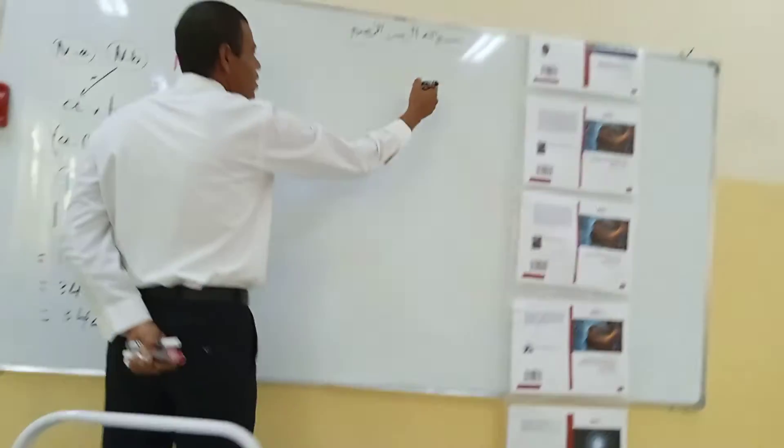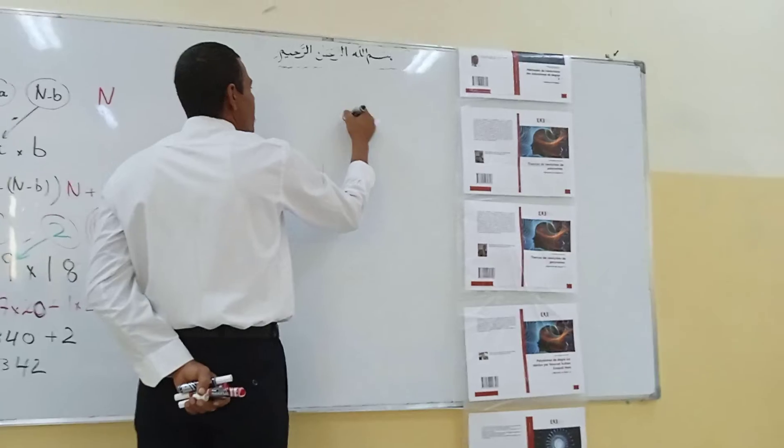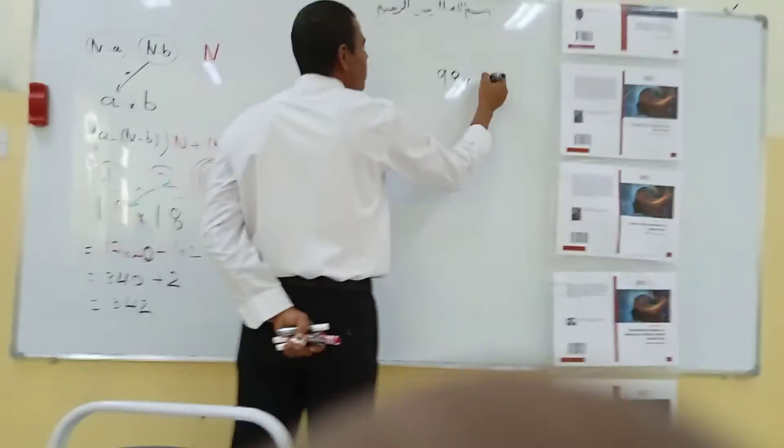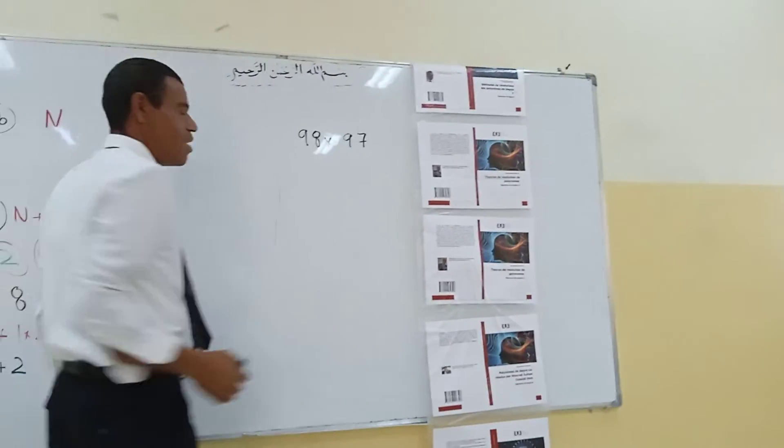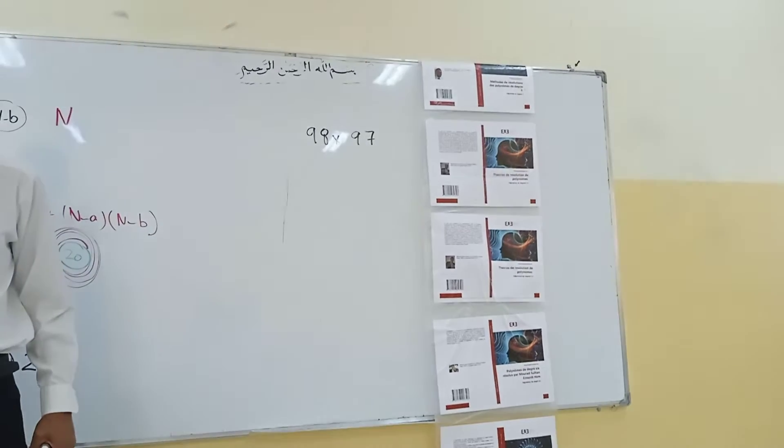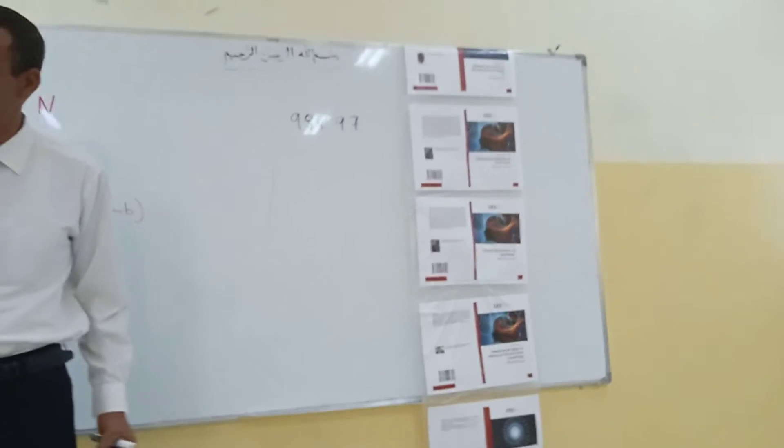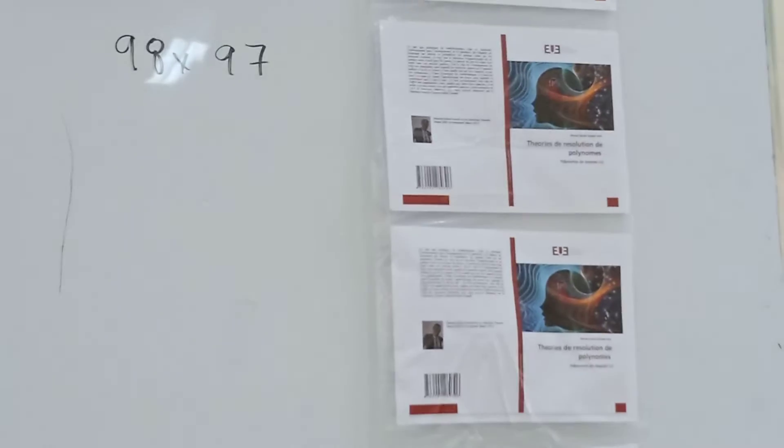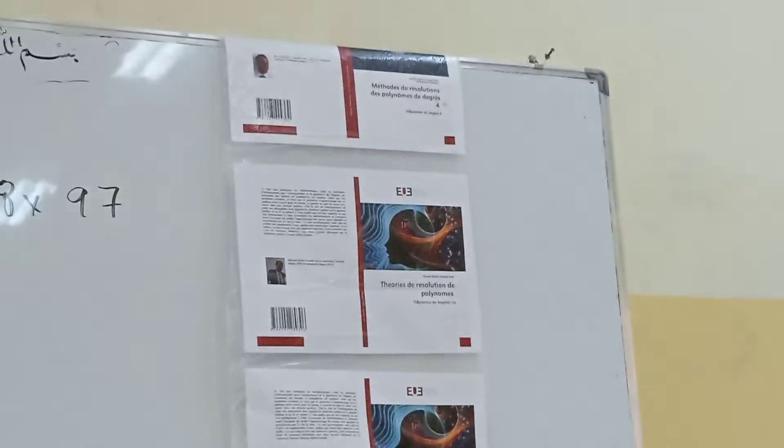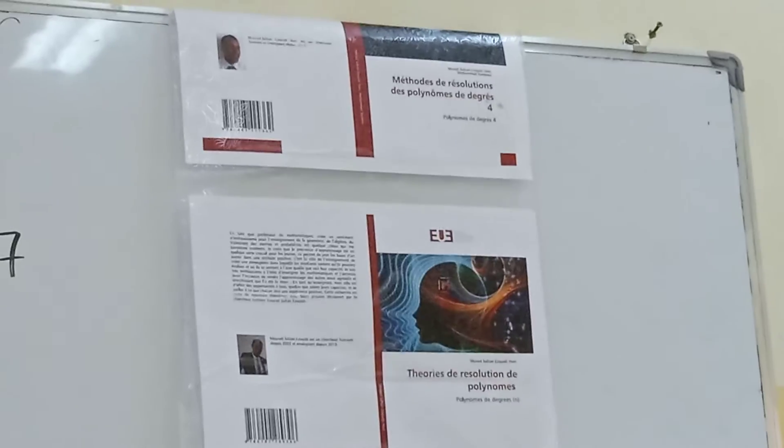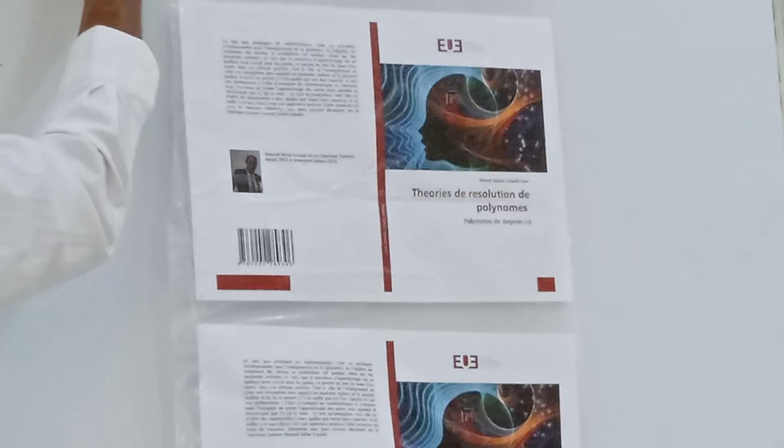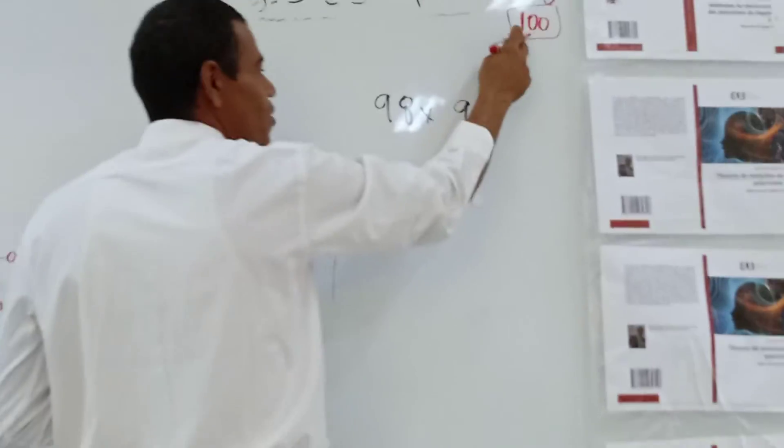Another example: 98 multiplied by 97. How can we do this one? So the nearest number to 97 is what? 100. I will write here 100. Don't forget all these terms, we will use this one.